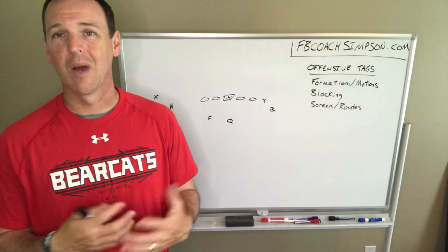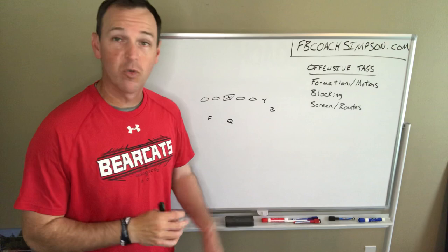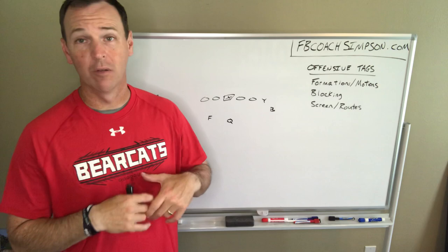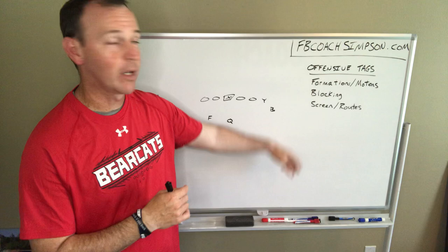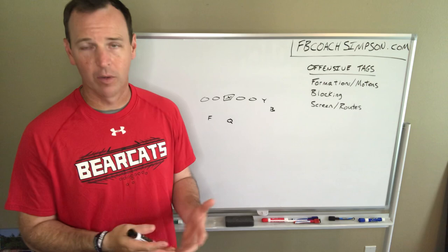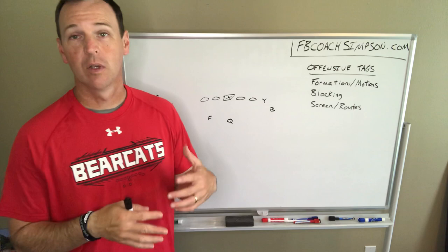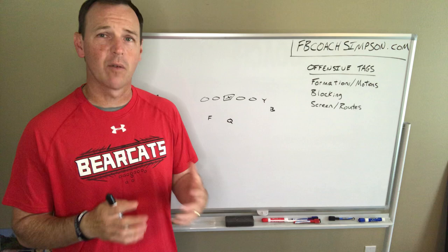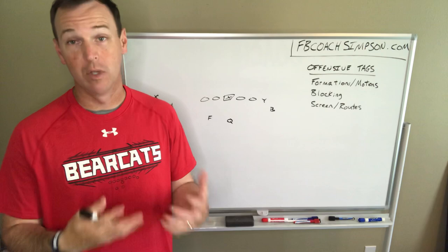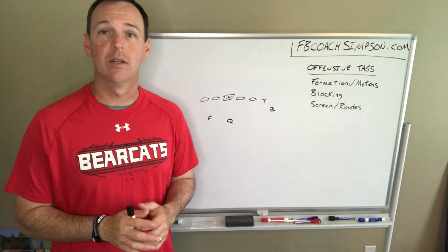We're going to talk first about formations and motions — the way you can tag your offense to make it very multiple without being confusing to your kids. Then the next video coming later this week will cover tagging blocking, something I've learned that you may use in your offense as well. And then tagging screens and routes. All of this stuff is done in most offenses you watch on Sunday and Saturday — it's just how they do it that can be confusing.